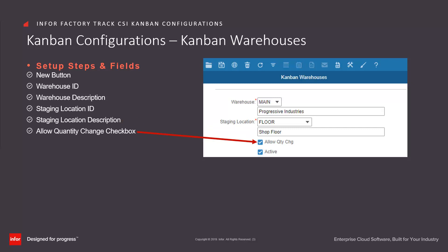Select the Allow Quantity Change checkbox to allow users to change the replenishment quantity from the default quantity for Kanban using the Kanban Item Locations form. Select the Active checkbox to use this warehouse for Kanban replenishment requests. Clear the checkbox to prevent replenishment requests being made for Kanban items located in this warehouse. Click on the Save button.